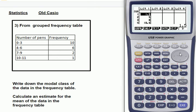So then we go back up to list 2, and we need to just fill in the frequencies, so 10, 6, 2, 1.